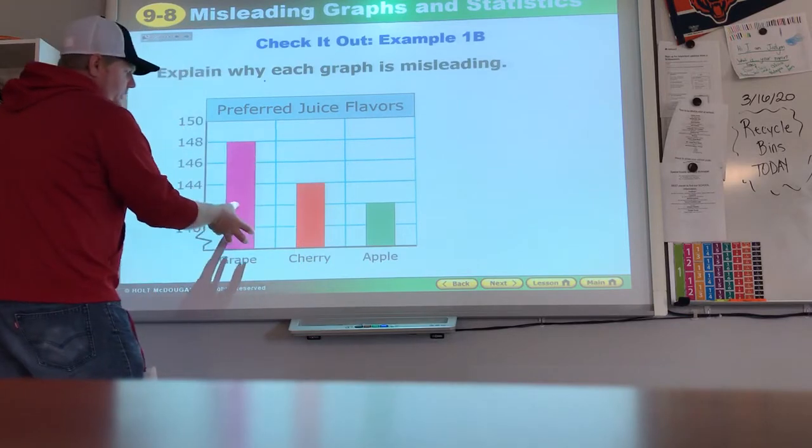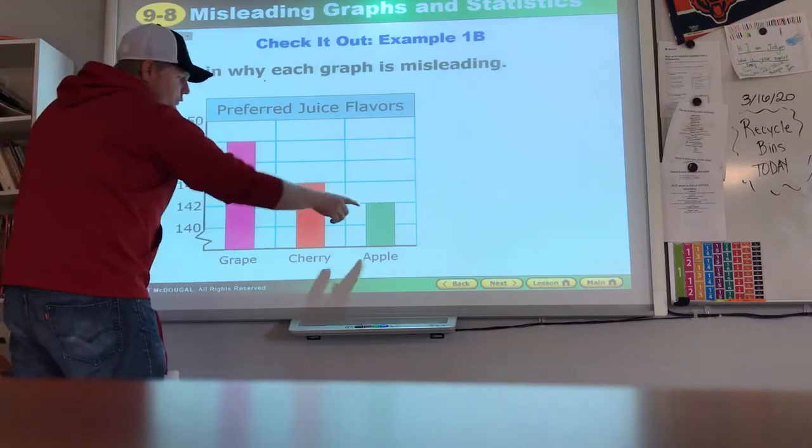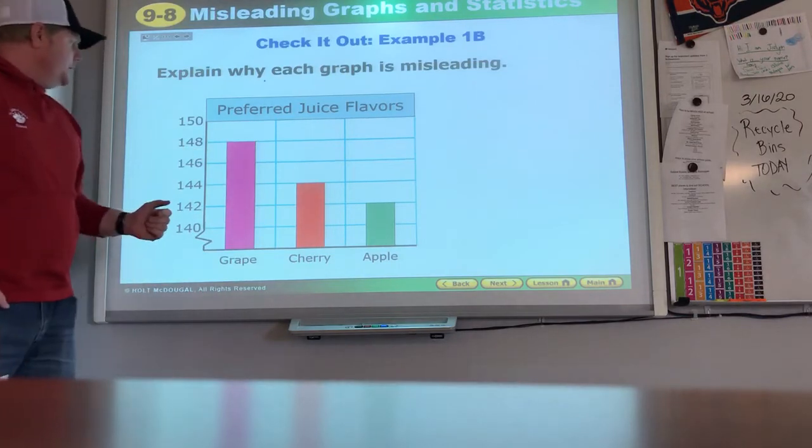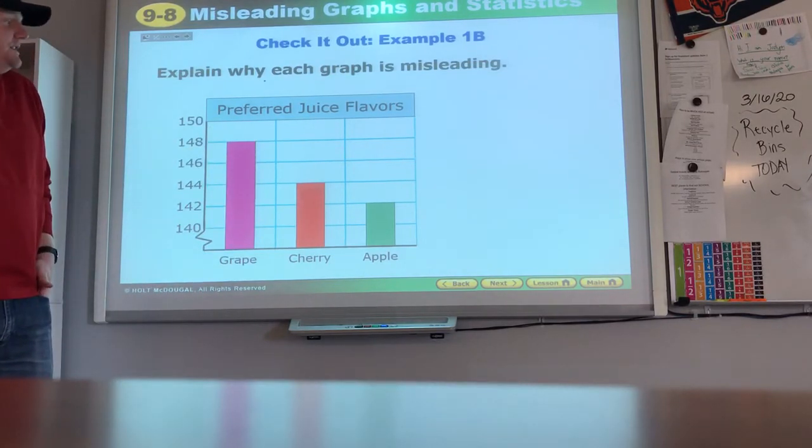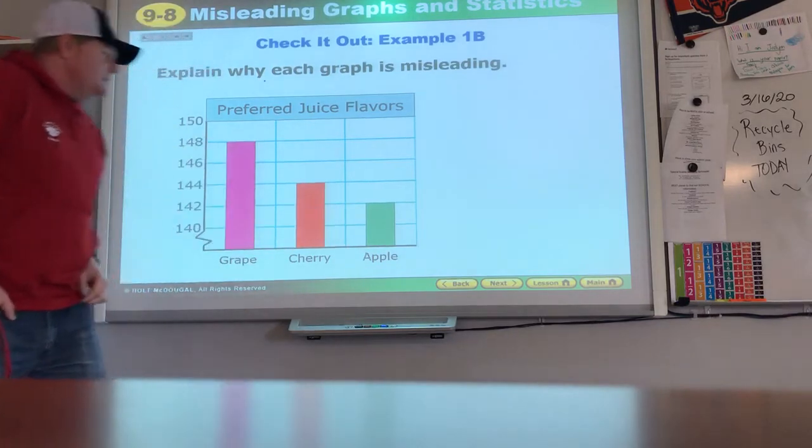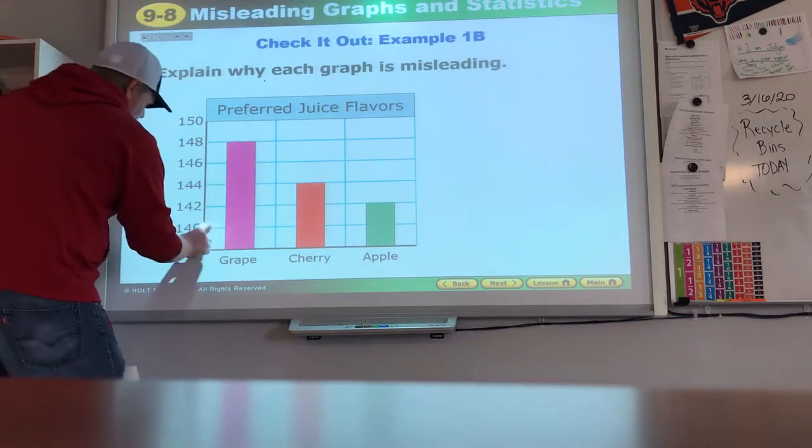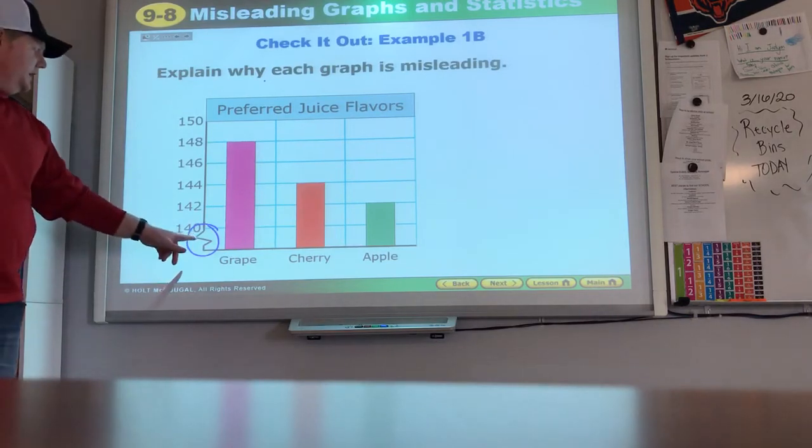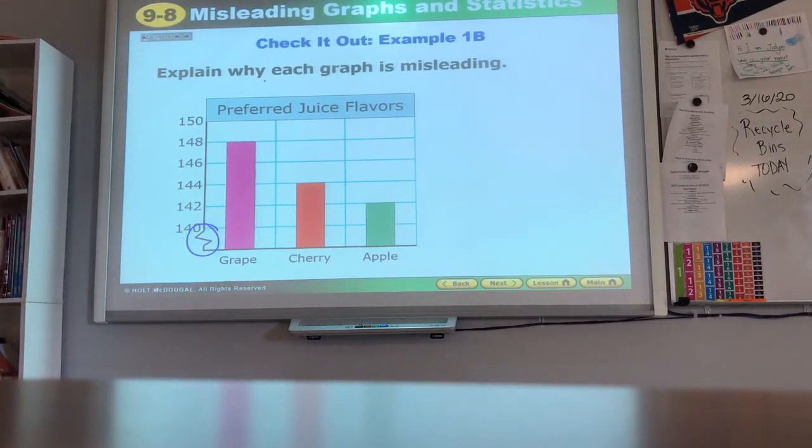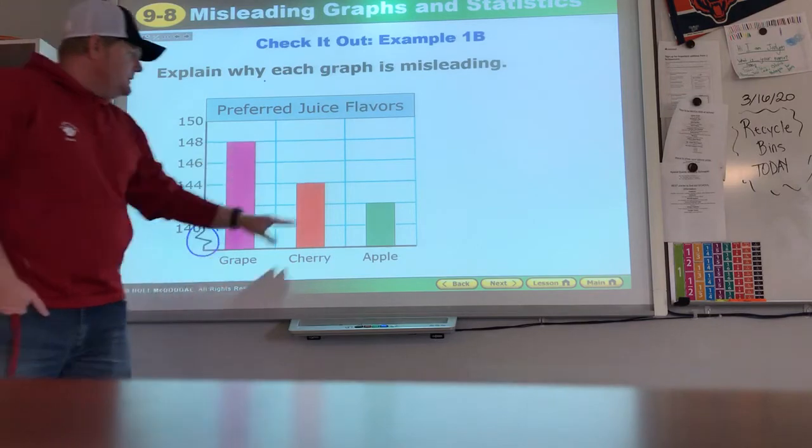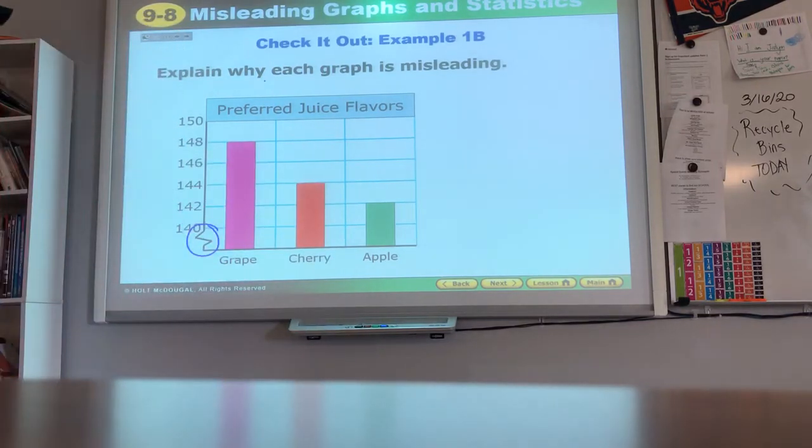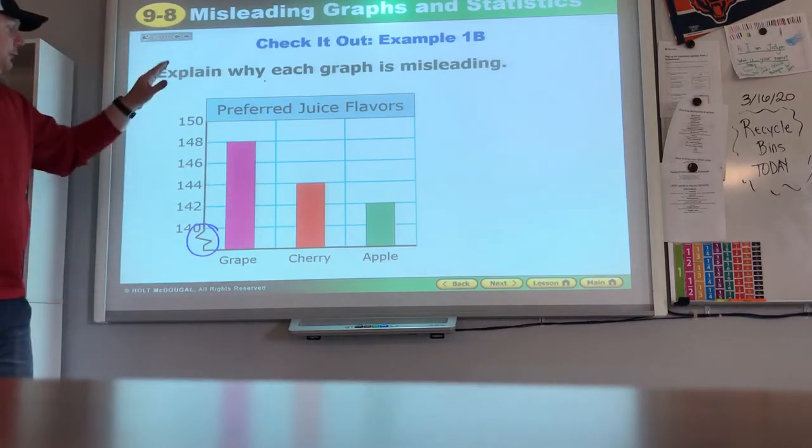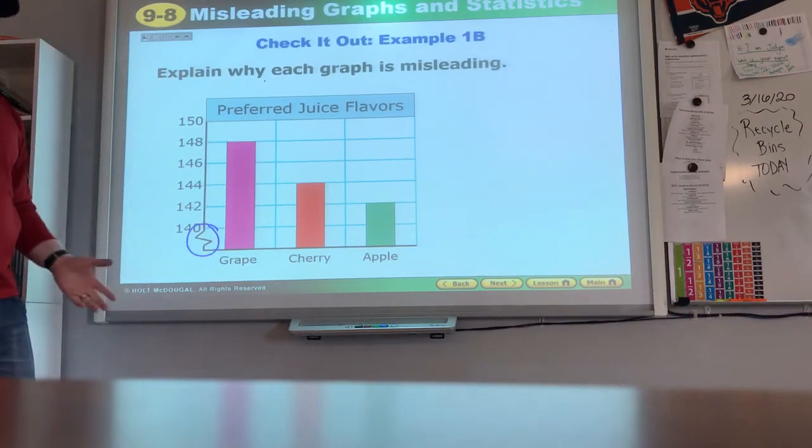But my big problem with this is if I take this green one and I come over here, more than two of these apples will fit in there. So it looks like grapes has got more than double what apples does and the reason for that, that guy right there, because we skipped the first 100. We only see the difference in the last little bit here and therefore that six is exaggerated very much.